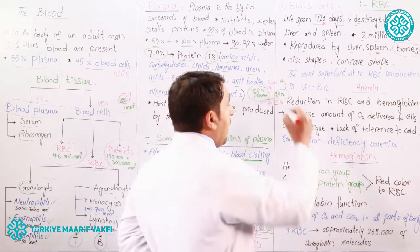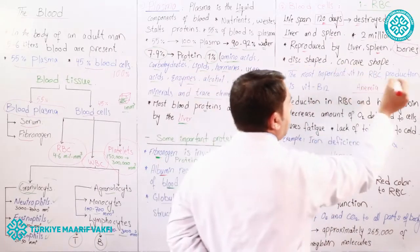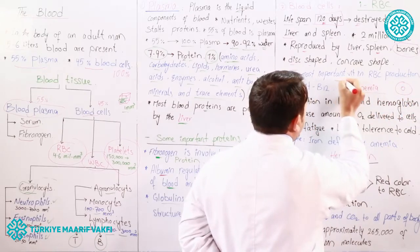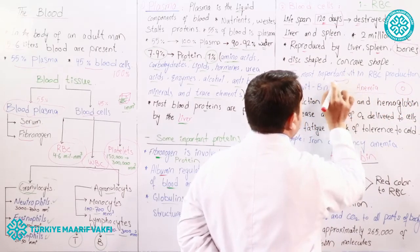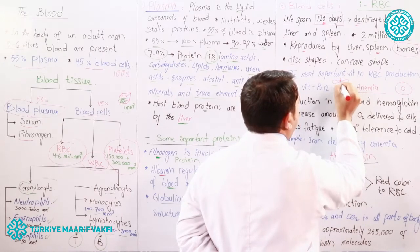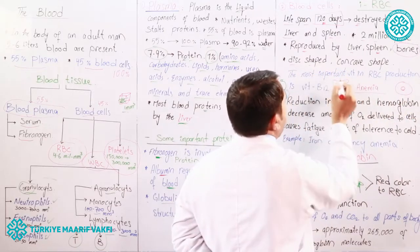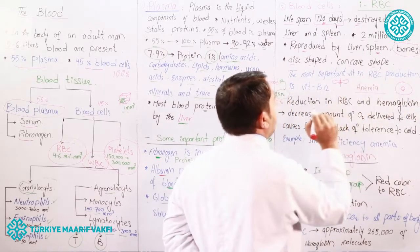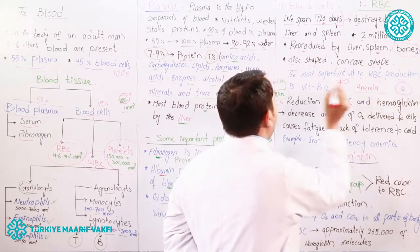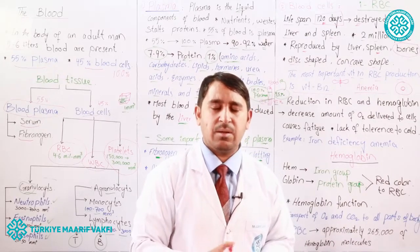The shape of the RBC is disc-like and concave. If we look at an RBC from the side, we can see the concave shape. The most important vitamin in RBC reproduction is Vitamin B12.